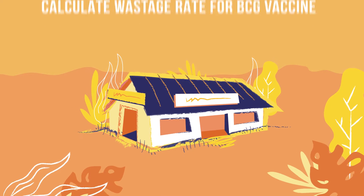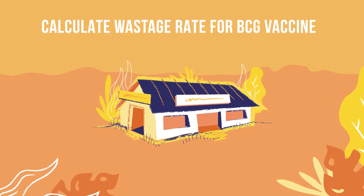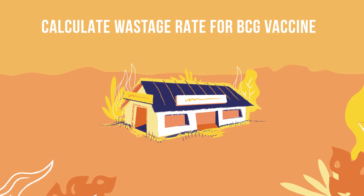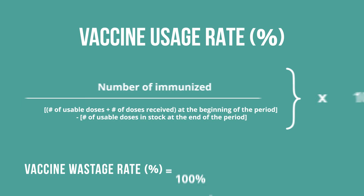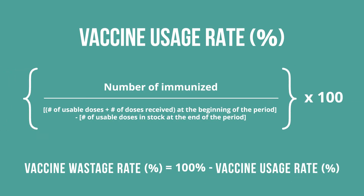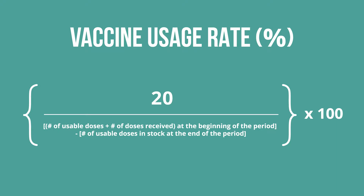Let us say you want to calculate last month's wastage rate for BCG vaccine in your health facility, where you vaccinated 20 infants. You will be using this formula. First, you will calculate your vaccine usage rate. Since you immunized 20 infants last month, that number goes into the numerator position.